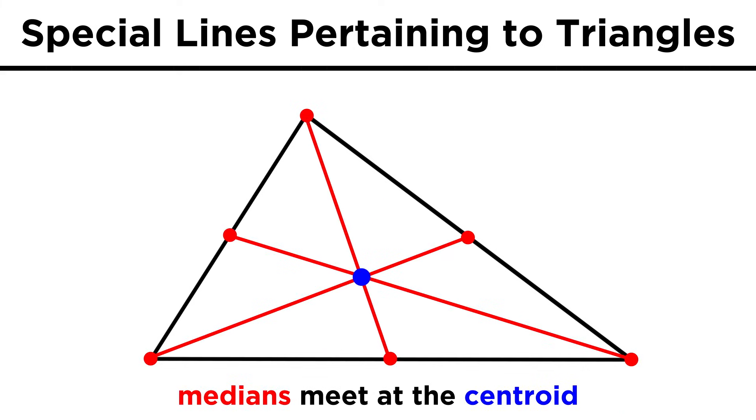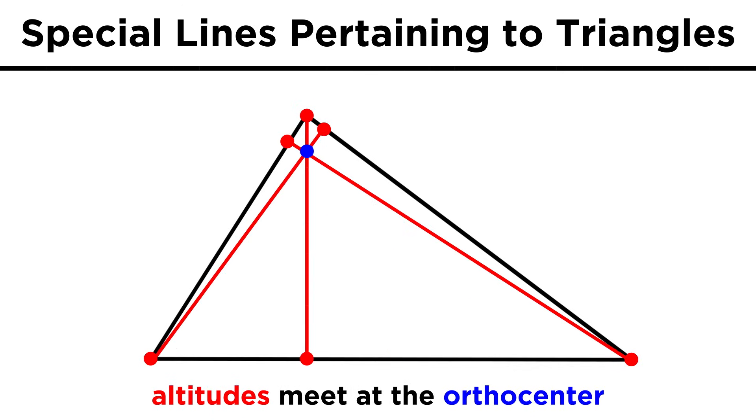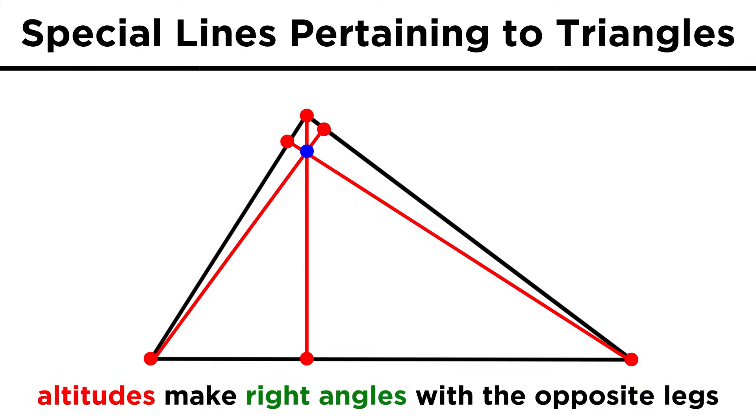The point where the three medians meet is called the centroid, and the point where the three altitudes meet is called the orthocenter. Again, notice the right angles required to get the orthocenter, whereas for the centroid, the angles can have any value. Let's check comprehension.